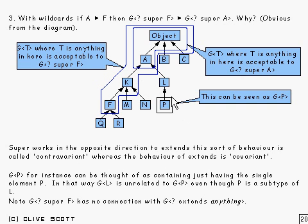Now if you want to, you can look at G of P as being just that little set there, P by itself. And that shows you how G of P and G of L are not related at all, even though P is a sub type of L.